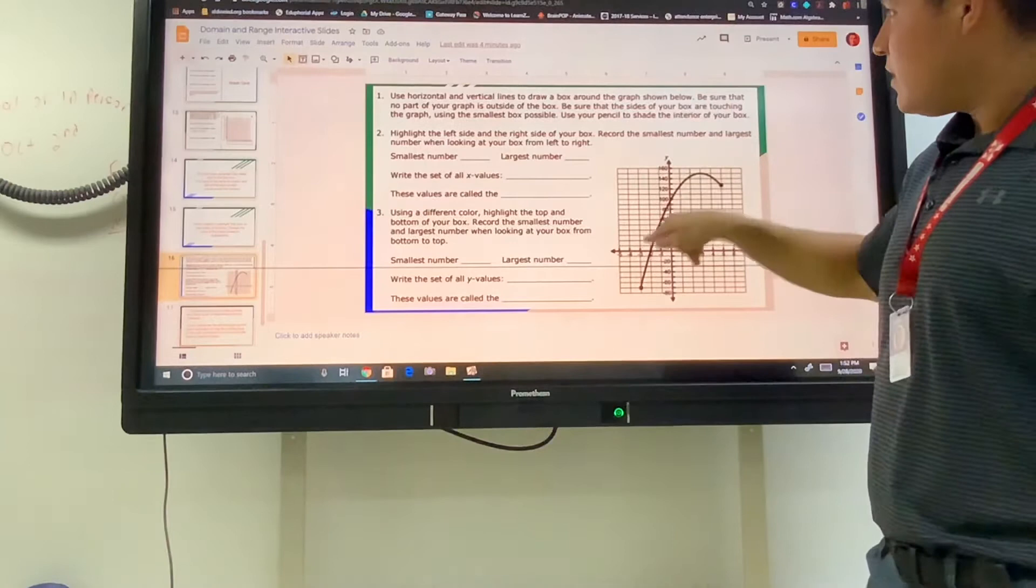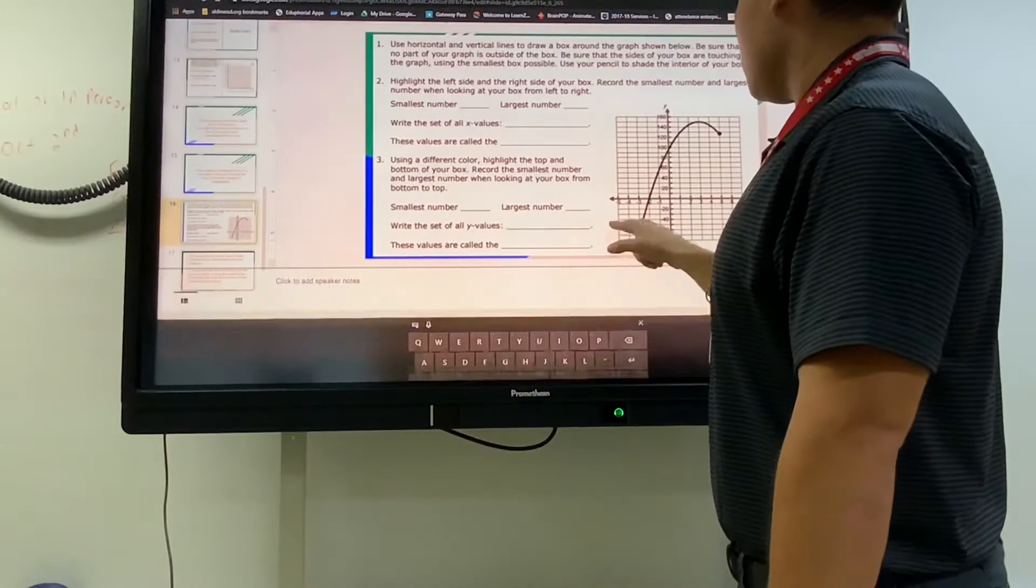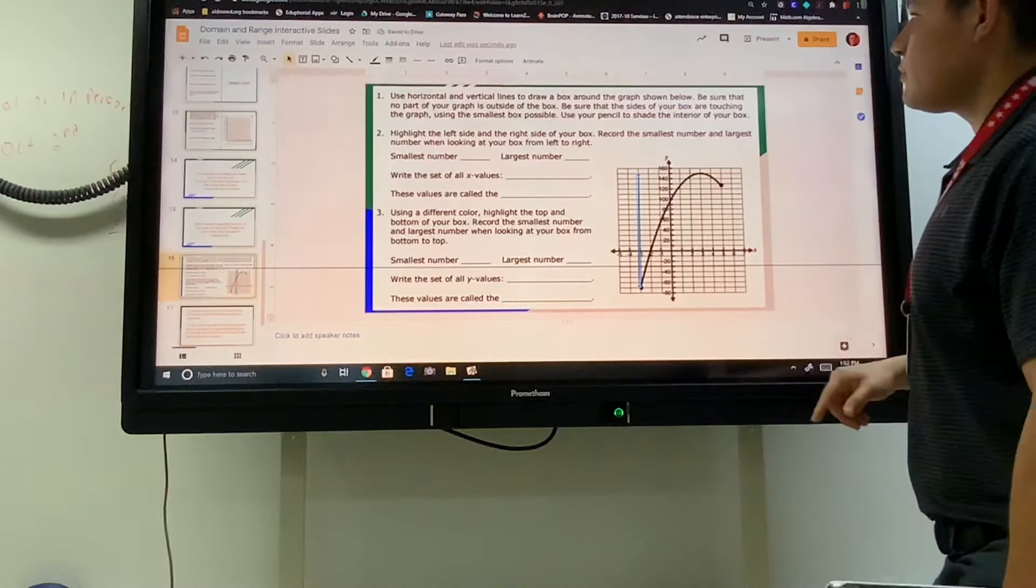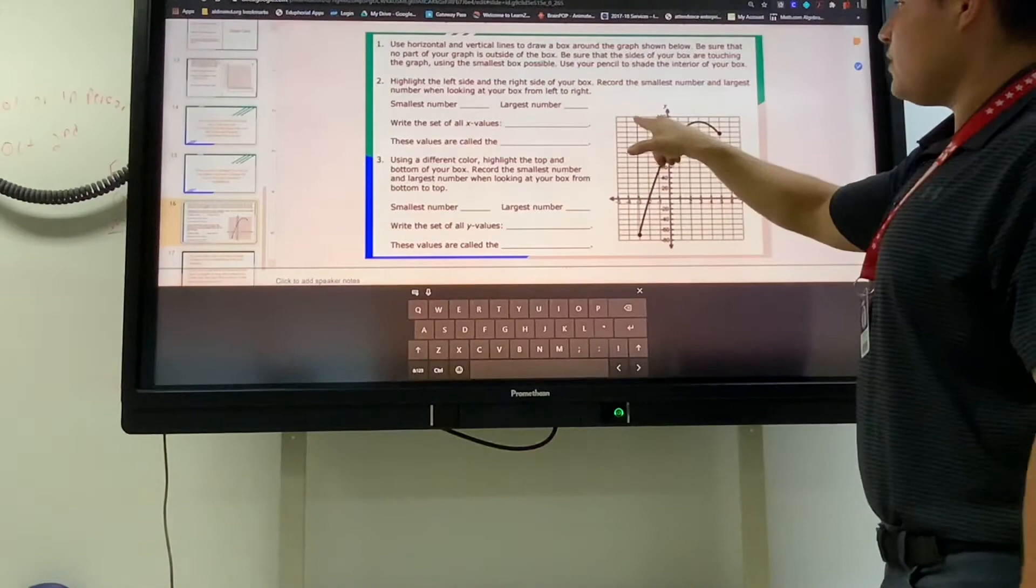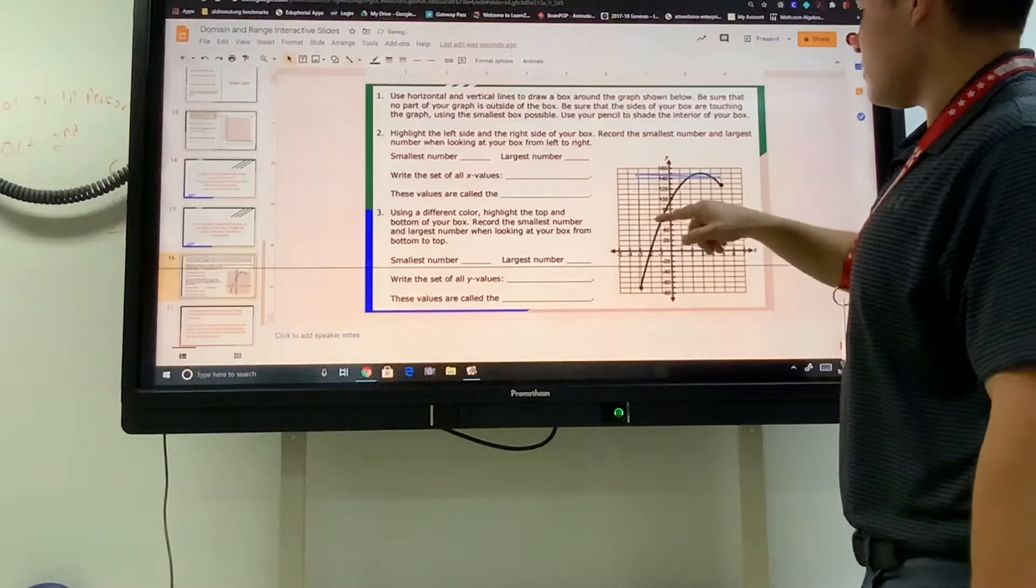We want our box to touch the edges, but it still has to be a perfect box. So let's show what that would look like. Starting from here, go up to the top. Then going from here, connect until we are at the right most spot.